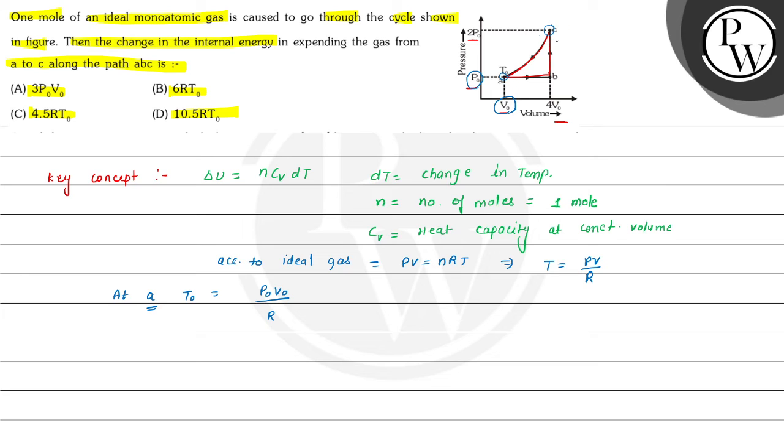Now, for at C point, we can write Tc is equals to, here pressure is 2P₀ and volume is 4V₀. So 2P₀·4V₀ divided by R.